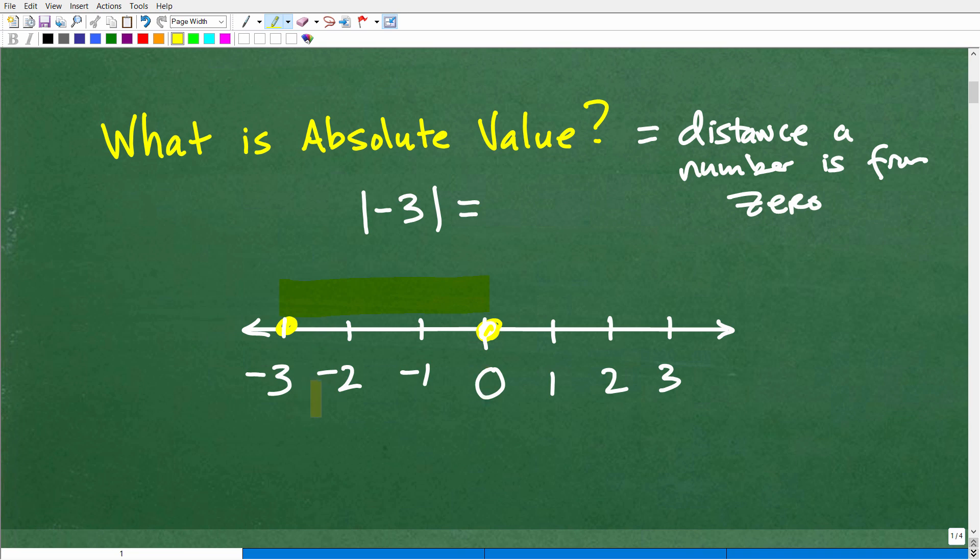Now, before I answer this question, okay, how far is three, positive three, from zero on a number line? Well, it would be what? It would just be three units away, okay?